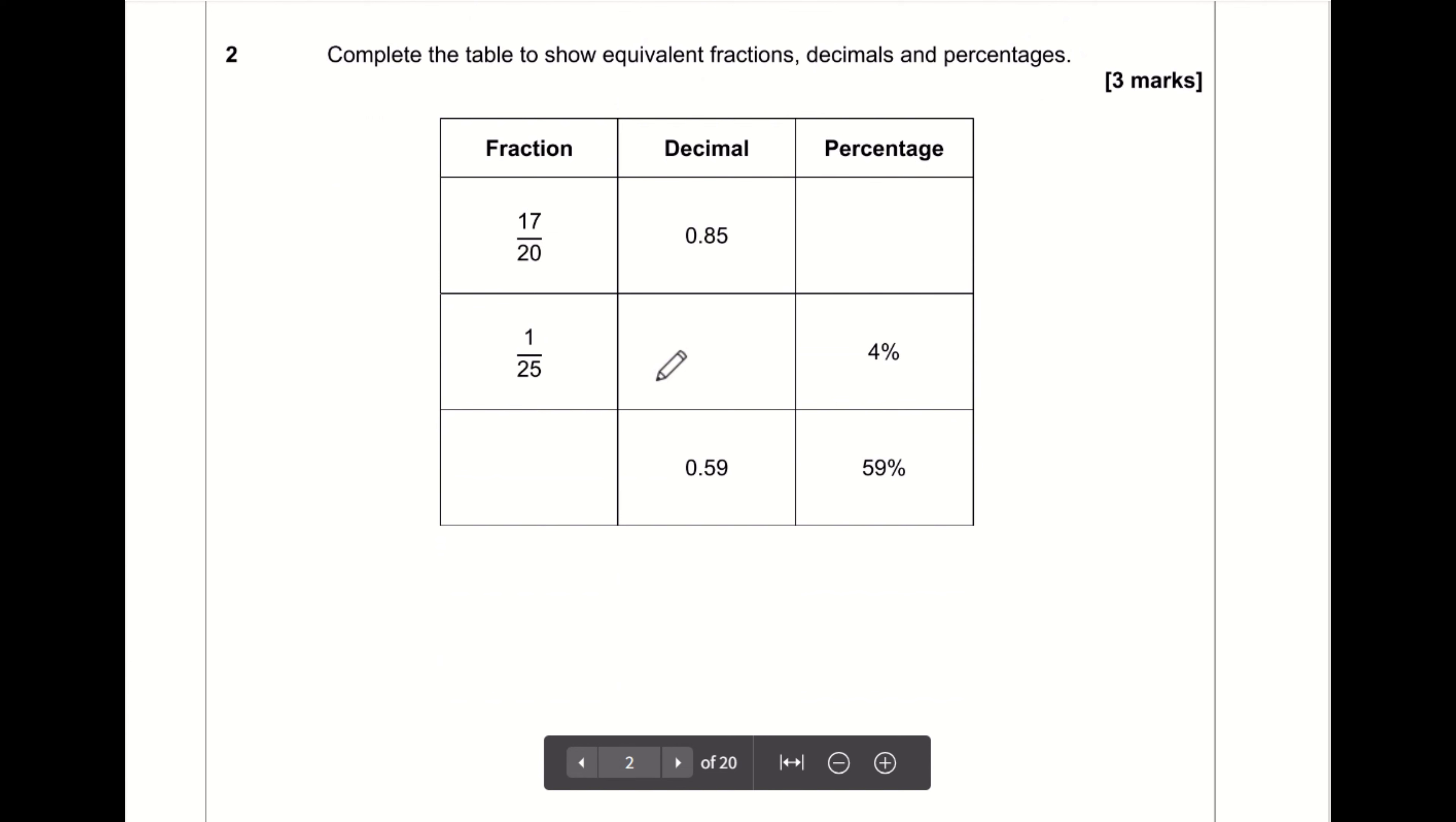Number two, complete the table to show equivalent fractions, decimals and percentages. So the first line, 17 twentieths, which is 0.85. To turn a decimal into a percentage, we multiply by 100. So 0.85 times 100 is 85%. Similarly, to convert the percentage into the decimal, we are dividing by 100. So 4 divided by 100 is 0.04. For the final row, 59% means 59 out of 100. Is it a fraction in its simplest form? Can we divide the top and the bottom by something? The answer is no, we can't. 59 is a prime number. So 59 over 100 is the fraction here.